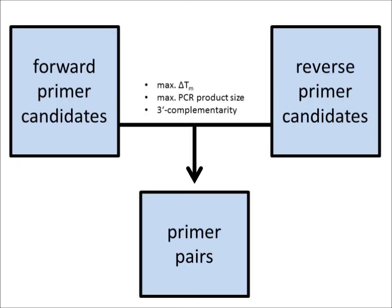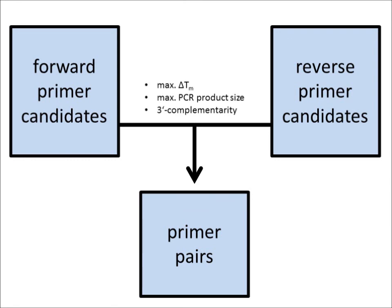Finally, verified forward and reverse primers are assembled to pairs if delta Tm and PCR product size do not exceed the critical values and both primers do not form primer dimers.